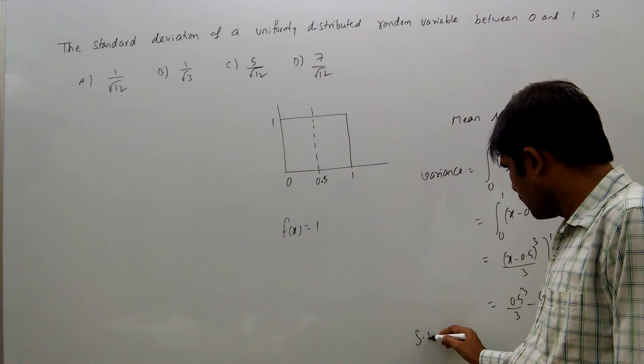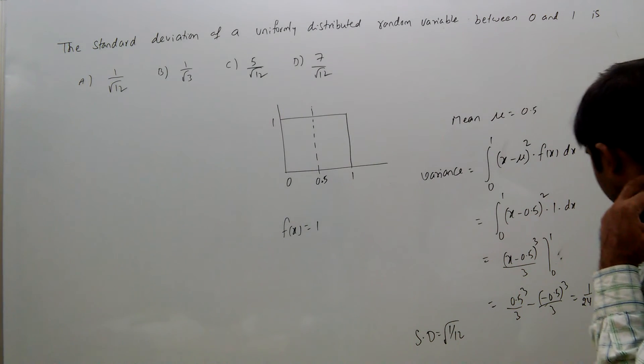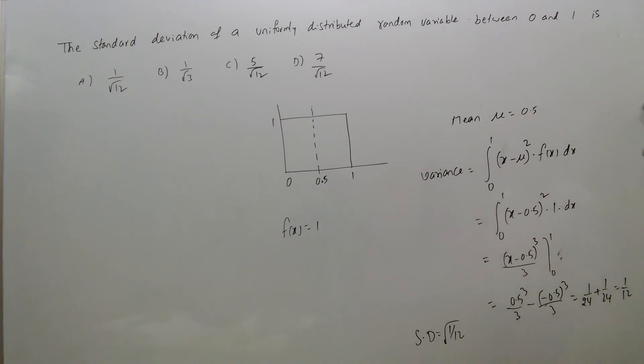Standard deviation equals the square root of variance, which is the square root of 1/12. So standard deviation is 1/√12, which is option a.